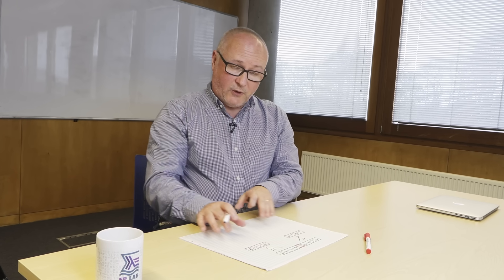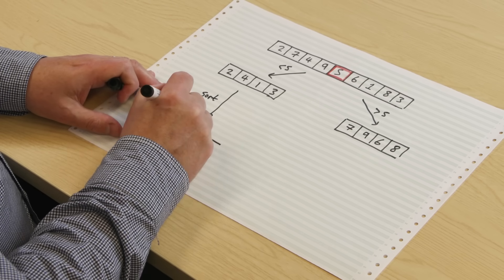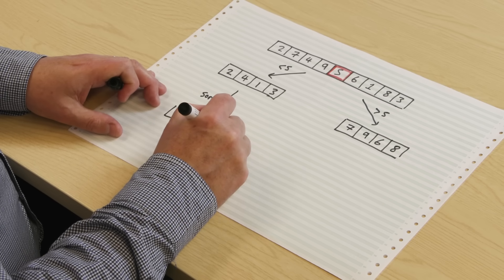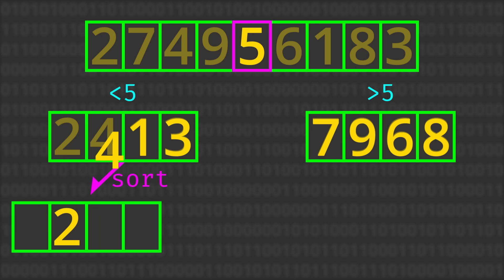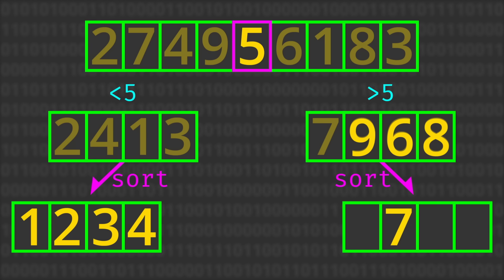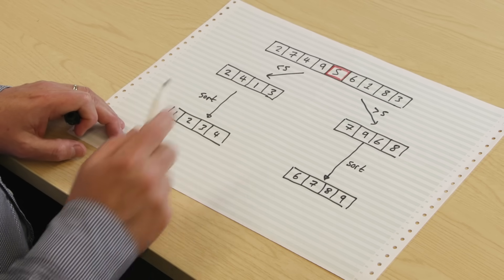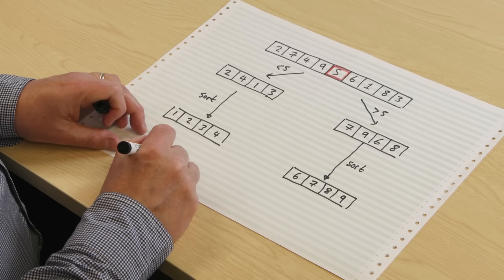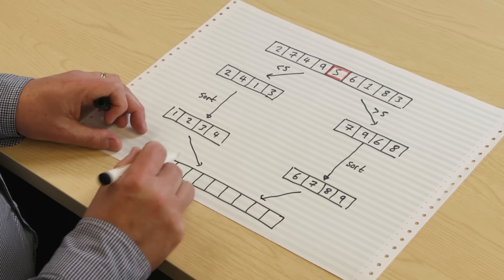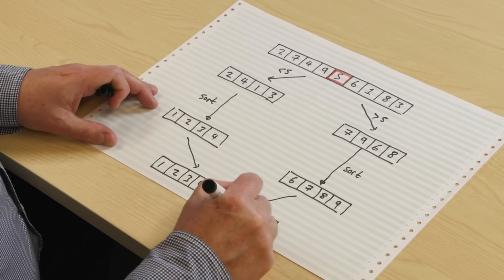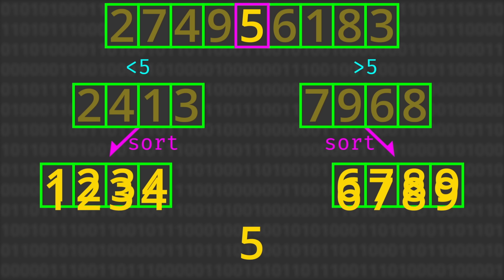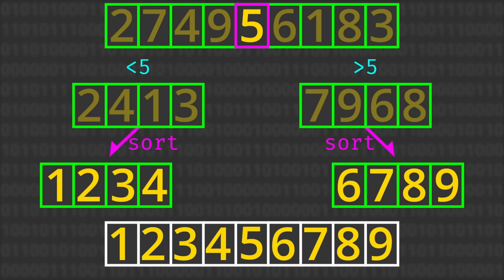The next step in the algorithm is we're going to sort in some way these two sub-lists. Suppose we sorted the numbers on the left — we're going to get one, two, three, four. And suppose we sorted the numbers on the right — we will get six, seven, eight and nine. The final step in the algorithm is the obvious one: we've got two sorted sub-lists. We bring everything back together — copy down one, two, three, four, then the original pivot value five, then six, seven, eight and nine. So what we've done in moving from the top of the page down to the bottom is we've sorted the numbers from one to nine.